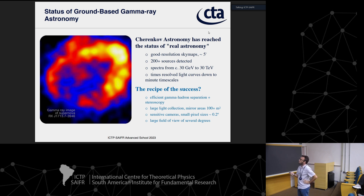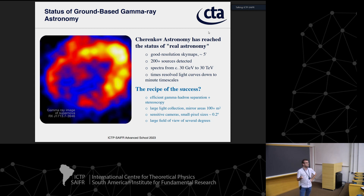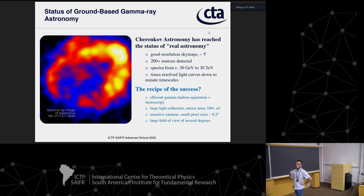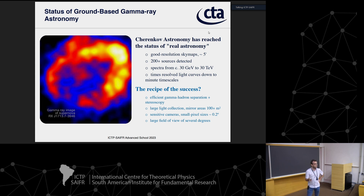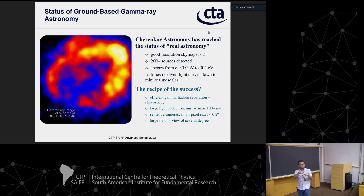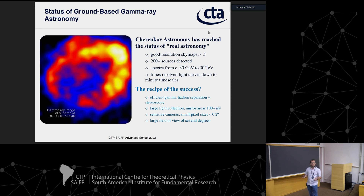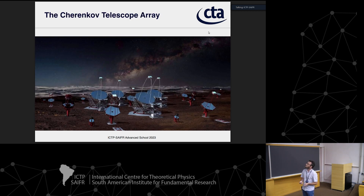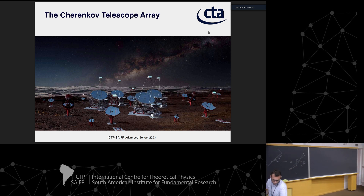What was the instrumental recipe for success in Cherenkov astronomy? First, efficient gamma-hadron separation and stereoscopy, which gave angular resolution and background separation capability — these were the two essential things defining the field. Second, large light collection area: mirror areas above 100 square meters to collect enough Cherenkov light even from a small part of the 100,000 square meter shower light pool. Third, very sensitive cameras with small pixels to construct and model shower image shape. Fourth, a large field of view of several degrees to image extended sources, mostly in the Galaxy.